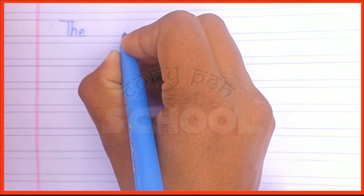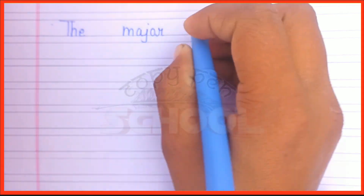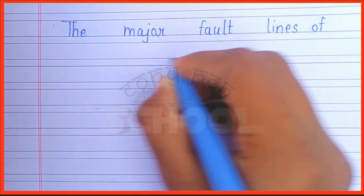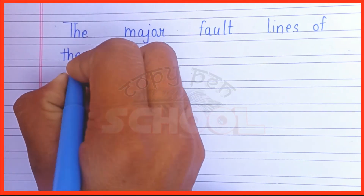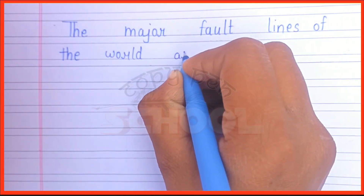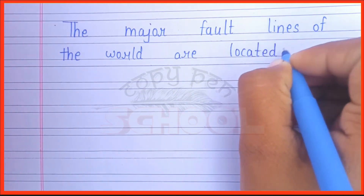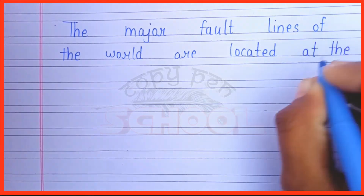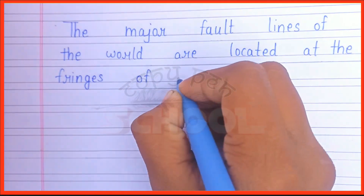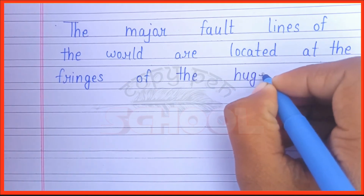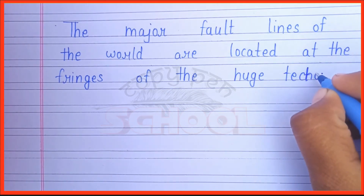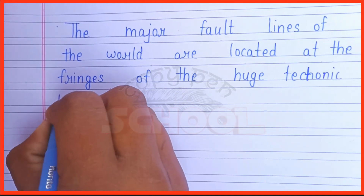The major fault lines of the world are located at the fringes of the tectonic plates.